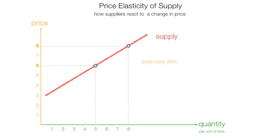Price rises 33% and quantity goes up 60%, so quantity is growing faster than prices. In this case, price elasticity of supply is equal to 1.8.